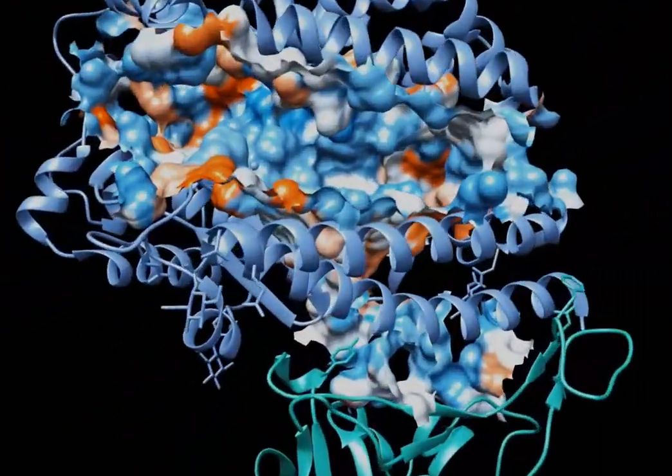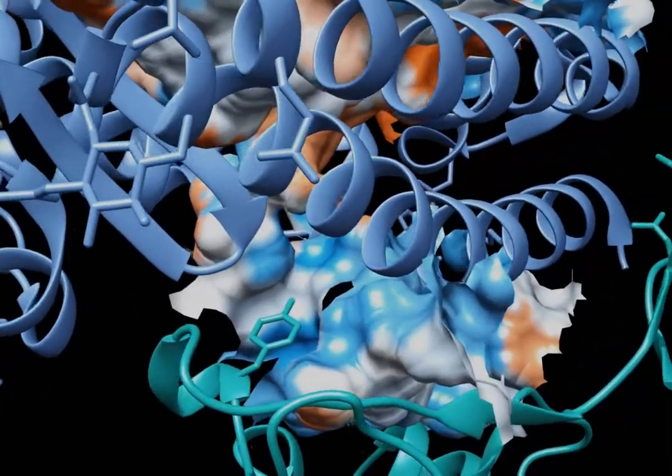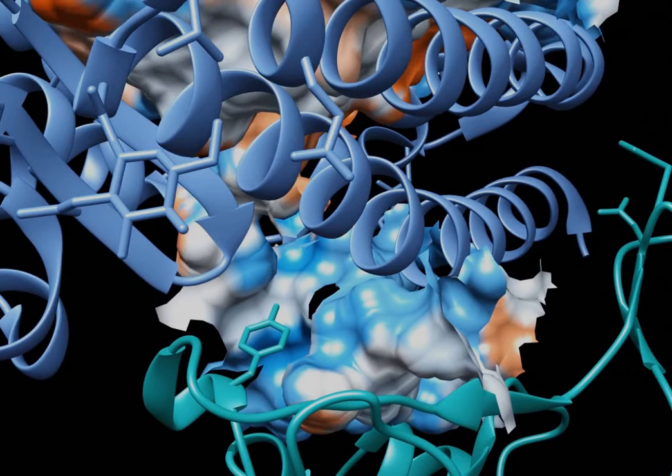At last, another kind of contribution to affinity are pockets, and particularly hydrophobic pockets. A pocket is a cavity inside a protein that can accept ligands, like this tyrosine side chain.